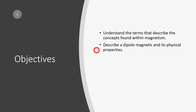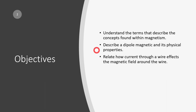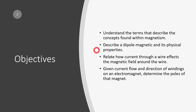We want to understand what a dipole magnetic element is and its physical properties, and relate how current through a wire affects the magnetic field around the wire. And given the current direction or the windings on an electromagnet, be able to determine the poles of that electromagnet.